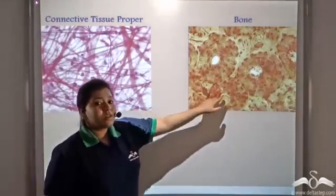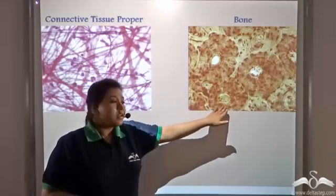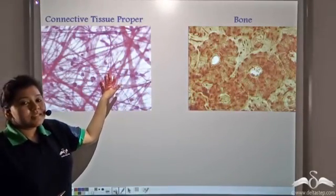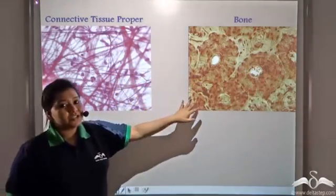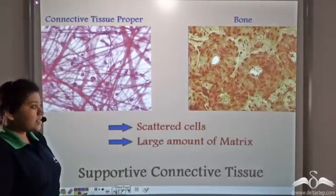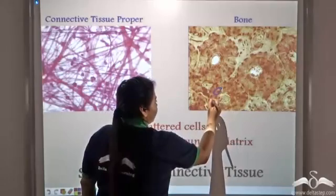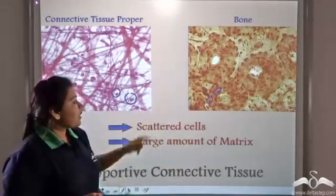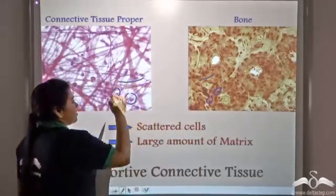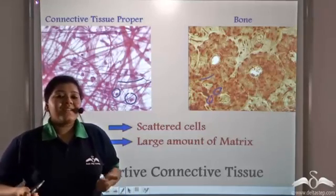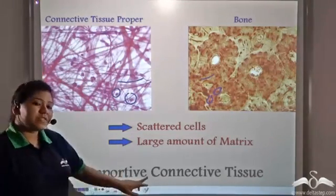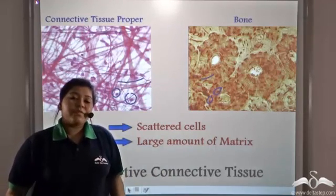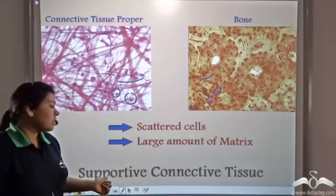This is what a bone looks like under the microscope. Now compare the structure of bone with that of a connective tissue proper. It has all the characteristics of a connective tissue proper — it has scattered cells, and there is also a large amount of matrix present between these cells. Since bones provide support to our body, they are known as the supportive connective tissue.